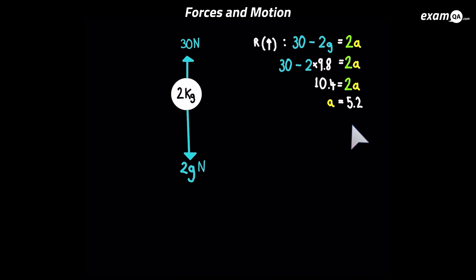That's the key thing with vertical motion — you always have a weight involved, and you must get quick at putting that weight on your diagram straight away. It's just the mass times g, where g is 9.8.